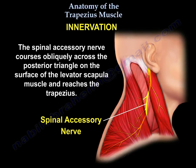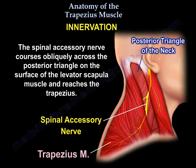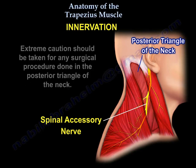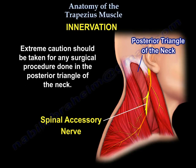The spinal accessory nerve courses obliquely across the posterior triangle on the surface of the levator scapula muscle and it reaches the trapezius. Within the posterior triangle of the neck, the nerve is vulnerable since it is superficial and only covered by skin and subcutaneous fascia. Extreme caution should be taken for any surgical procedure done in the posterior triangle of the neck.